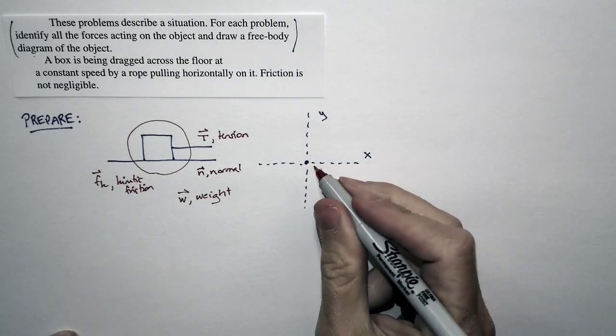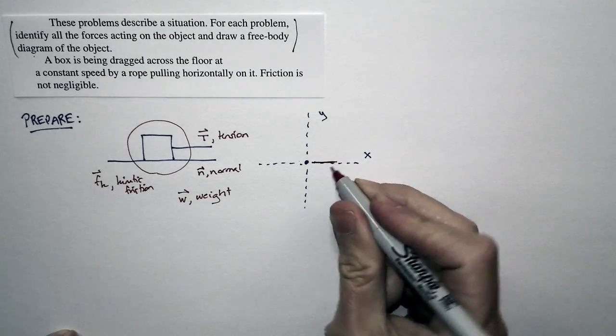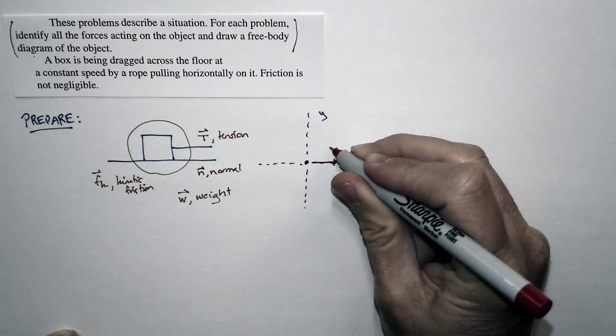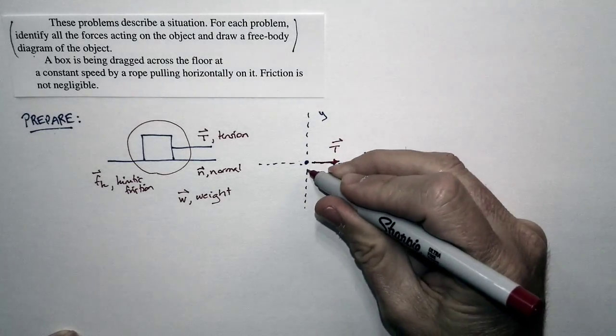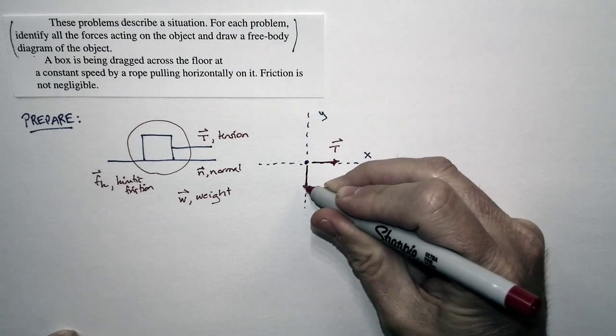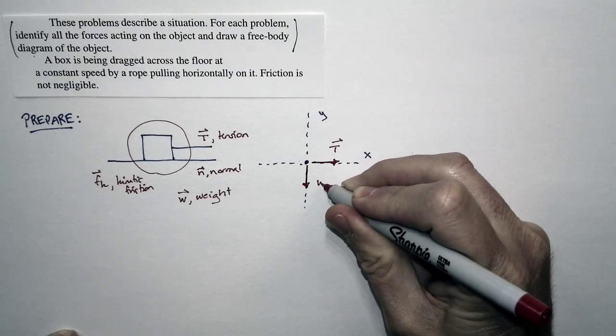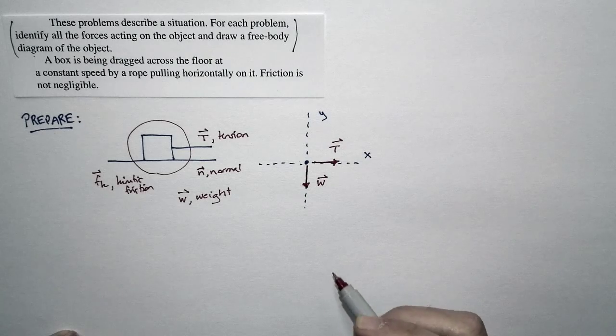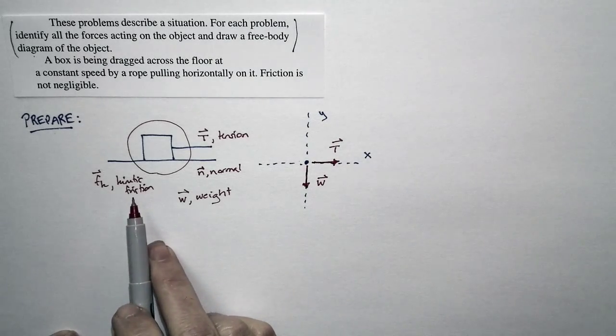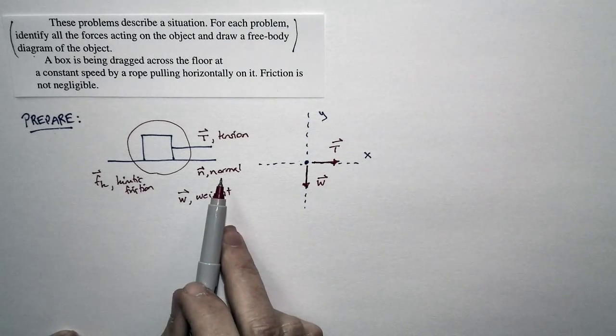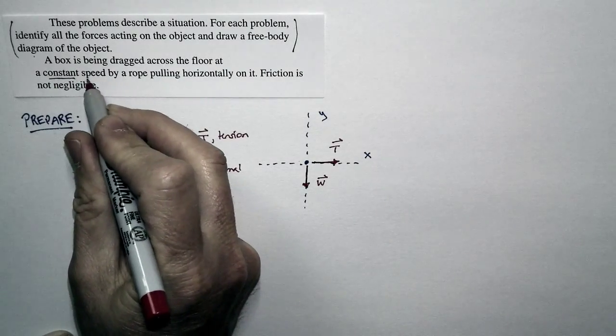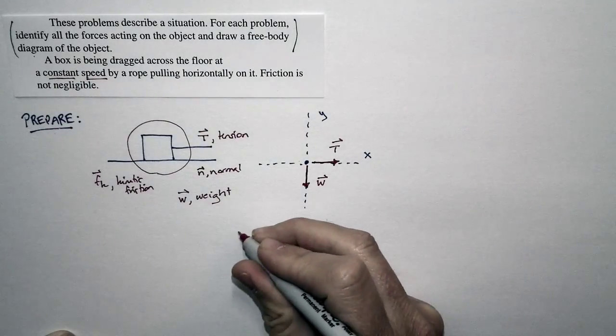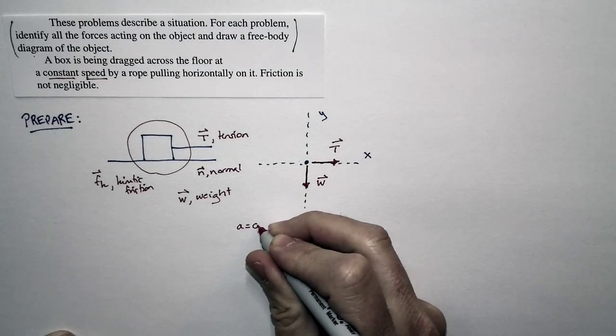And let's think about the forces in the direction that they act. Well, the tension force, as I've drawn it, is clearly acting to the right. So here's our tension force. The weight force acts straight downward. We know that that's true. But now let's look at the other forces, the kinetic friction force and the normal force. We know that the box is moving at a constant speed. And since the box is moving at a constant speed, we know the acceleration is equal to zero.